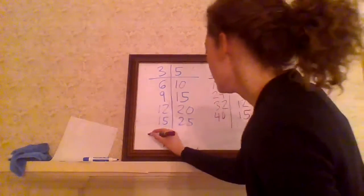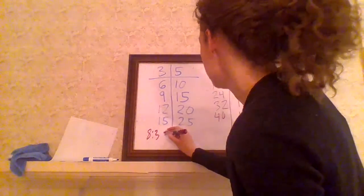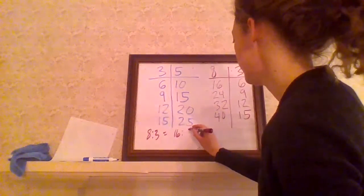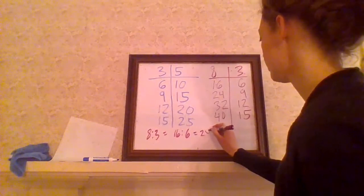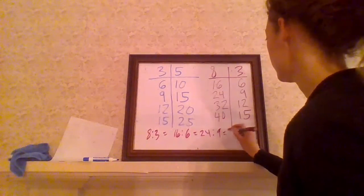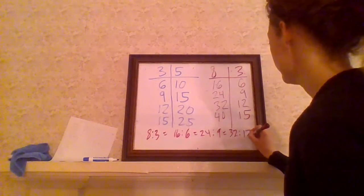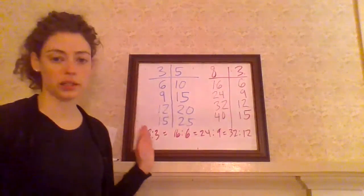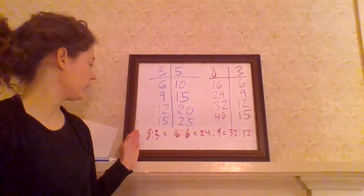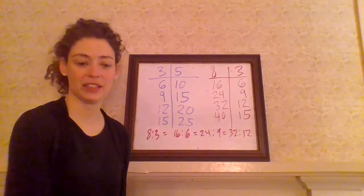And we would know that eight to three is equal to 16 to six, and that's equal to 24 to nine, and that's equal to 32 to 12, and so on. So we have created a string of equivalent ratios. Thanks for watching.